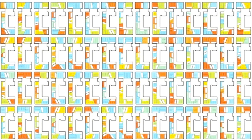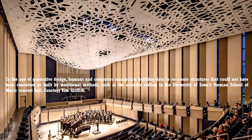After getting ready design options, we input some language called Visual Programming. For example, at the University of Iowa, the Voxman School of Music has a ceiling with many panels and openings. Using visual programming, you can design the ceiling to provide proper lighting, and adjust the ceiling arrangement to control lighting.